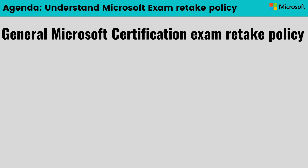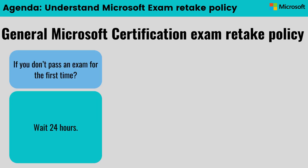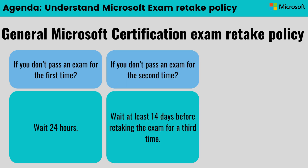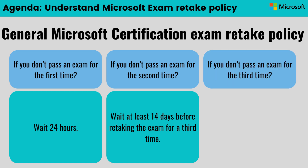Let's first understand the general Microsoft certification exam retake policy. The first point: if you don't pass an exam for the first time, you must wait 24 hours before retaking it. The second point: if you don't pass an exam for the second time, you must wait at least 14 days before retaking it for the third time.